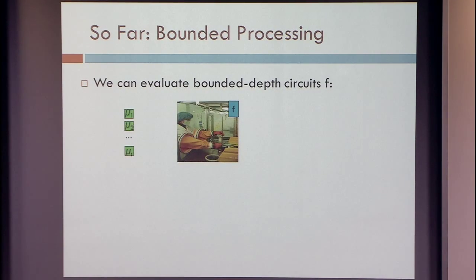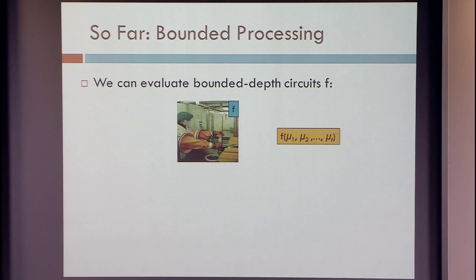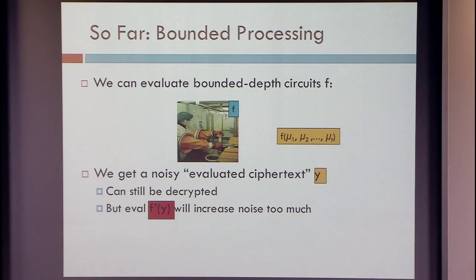So far we have bounded processing — we can evaluate bounded depth circuits. We have some bounded depth that we want to achieve, we set up the apparatus to achieve that depth, and then when we have encryptions of bits mu, we can run these encryptions through the evaluation procedure and get a ciphertext encrypting the result. The evaluated ciphertext is noisy — the original things had little noise, the new thing has more noise. You can still decrypt it, but if you try to compute more on it, you'll get something so noisy that you cannot decrypt it anymore.